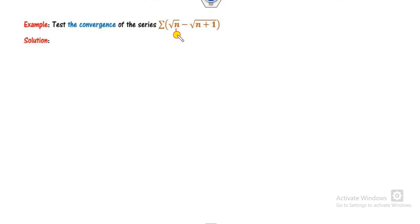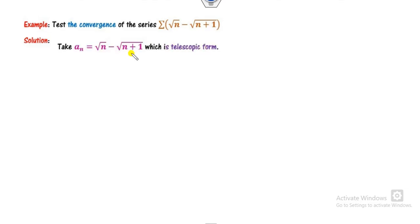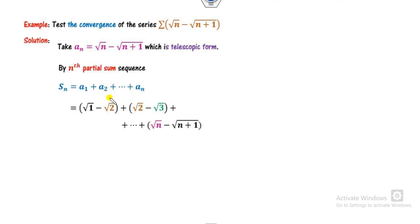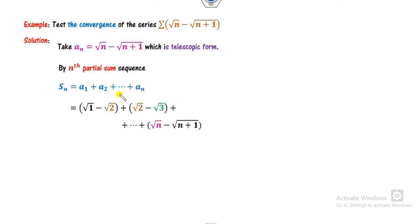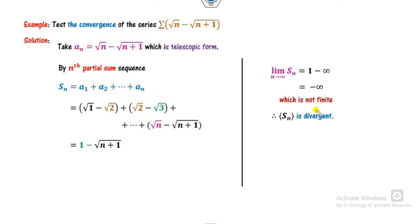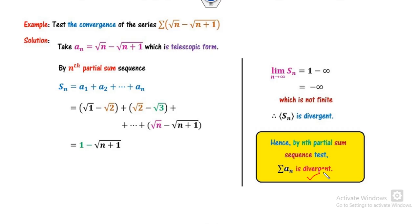Example 2: again we have n and n+1 consecutive terms — a telescopic form. Applying the nth term test: as n approaches infinity, it gives infinity minus infinity which is undefined, so we apply the nth partial sum sequence. Since it is already in telescopic form, no partial fraction decomposition is needed. After cancellation, the remaining term goes to minus infinity as n approaches infinity, which is not finite. Therefore the sequence is divergent, and by the nth partial sum test the series is also divergent.